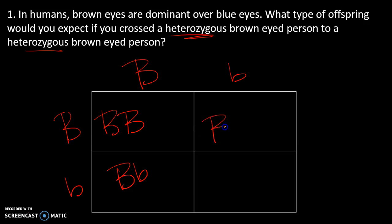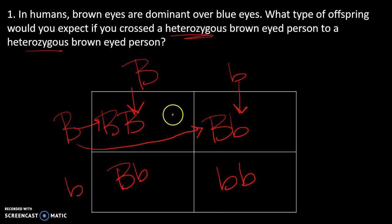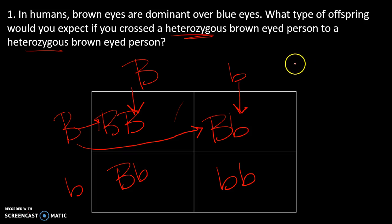This is the Punnett square that we're going to end up with. As we fill in the Punnett square, each spot is filled in by combining the alleles. This ties back to the law of independent assortment and segregation and random fertilization — we have two alleles for that trait, and there's equal probability of getting one or the other. So we want to see all of the chances.